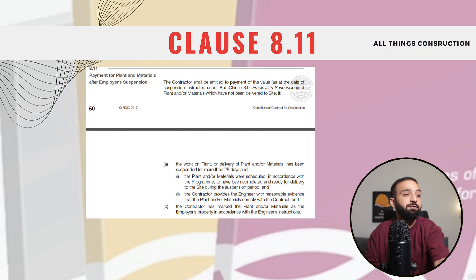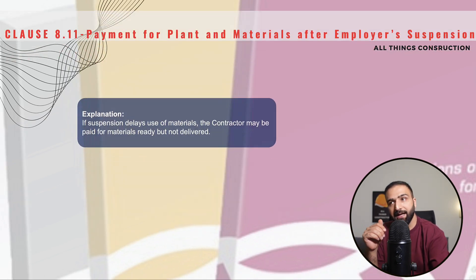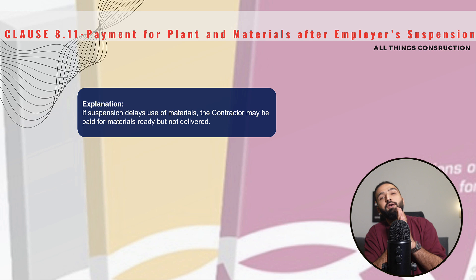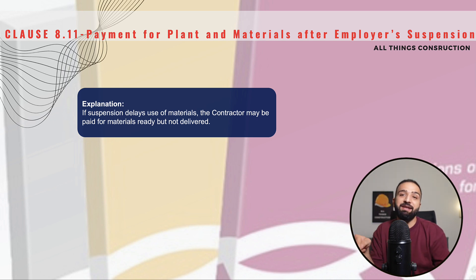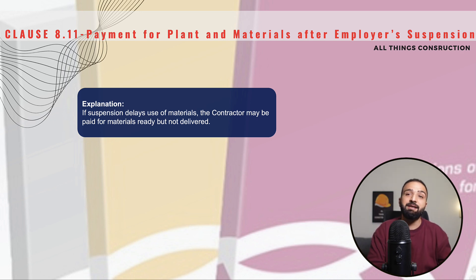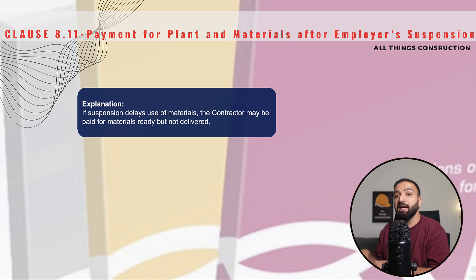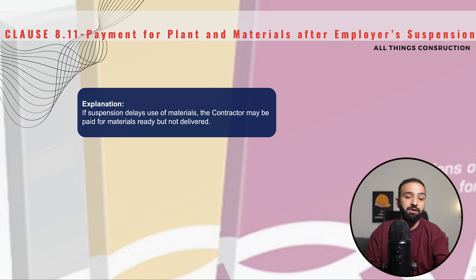Clause 8.11 is Payment for Plant and Materials after Employer's Suspension — a slightly tricky clause. For example, we had ordered all of the materials for the ceiling that we just discussed, and the ceiling design has changed. We will be entitled to the costs we have actually paid for the existing ceiling materials. The suspension of the works does not relieve the employer from his duty to pay us for costs incurred — even if the materials are not delivered to site, even if the order is placed and the materials are already produced in the factory, we will be entitled to recover these costs.